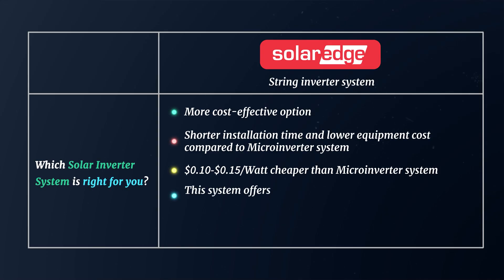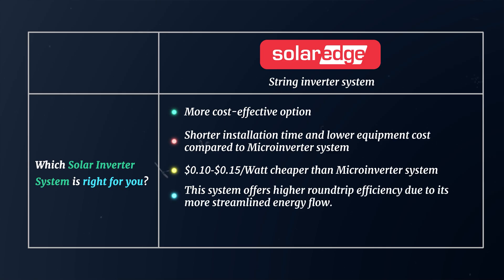This is why you'll often hear SolarEdge praised for having a higher round-trip efficiency, which is accurate due to its more streamlined energy flow. If you're going with microinverters but still want a battery, you may have to oversize your system slightly or add an extra panel or two to account for the conversion loss. And while 3 to 4% may seem like a small number, it can really add up over the long term. So if you're looking for a lower cost system that's optimized for battery efficiency, SolarEdge is an excellent choice.